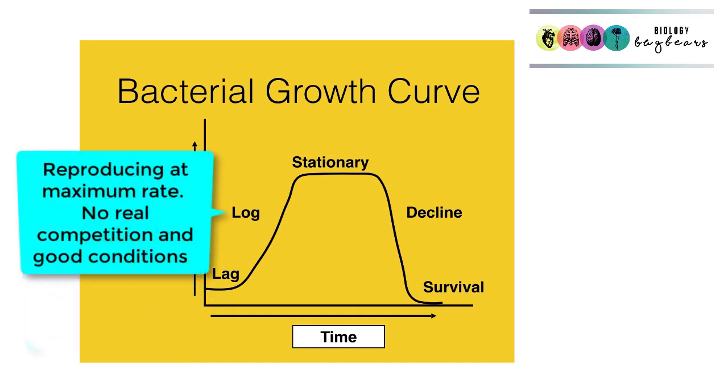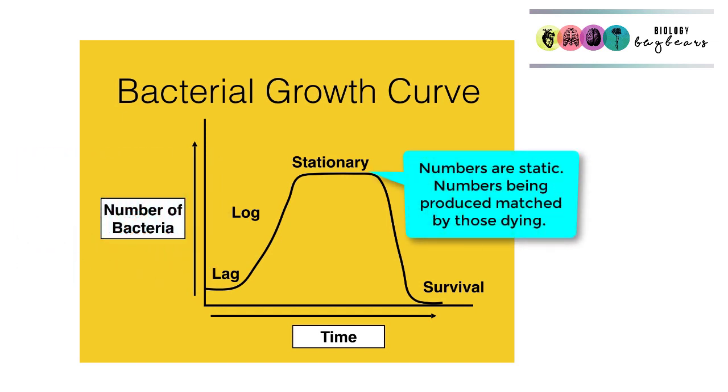Then we move on to the stationary phase. This is when there's no real increase or decrease in numbers because the numbers being produced by binary fission are being matched by those dying off.